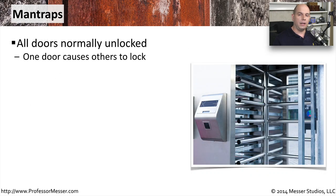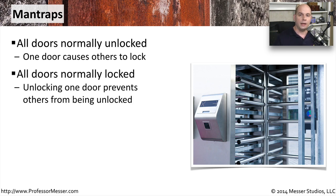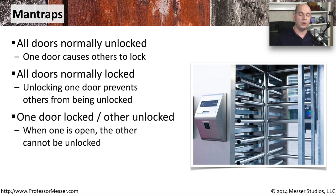A man trap takes the idea of a locked door to the next level. With a man trap, there are usually at least two doors involved. If you open one door, the other door is automatically locked, and if you close that door, the other can open — meaning only one person can go through at a time. You authenticate with your card, walk inside, and close the door behind you before the next door will open. This ensures only one person passes at a time and prevents multiple people from using one person's pass card.